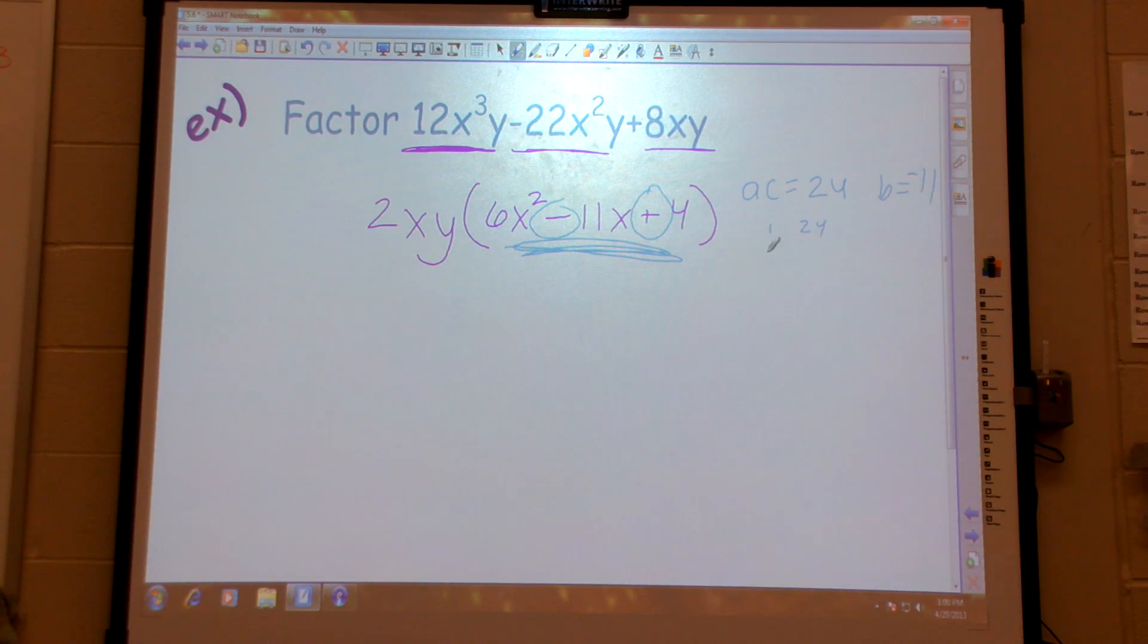So 1 and 24, 2 and 12, 3 and 8, 4 and 6, and 5. What's going to do that? I'm back at 6. Done. Now I know they're both negative. So which ones have to be negative 11? 3 and 8. 3 and negative 8.